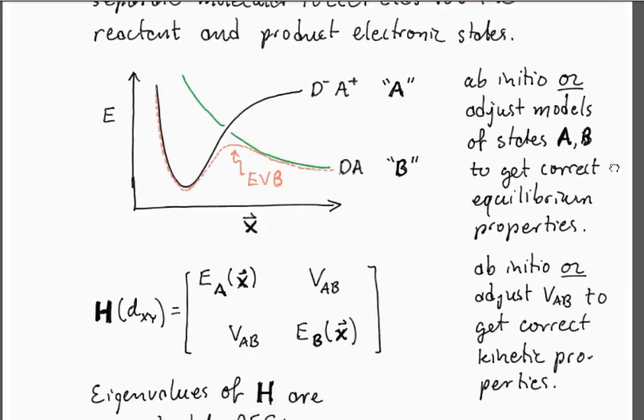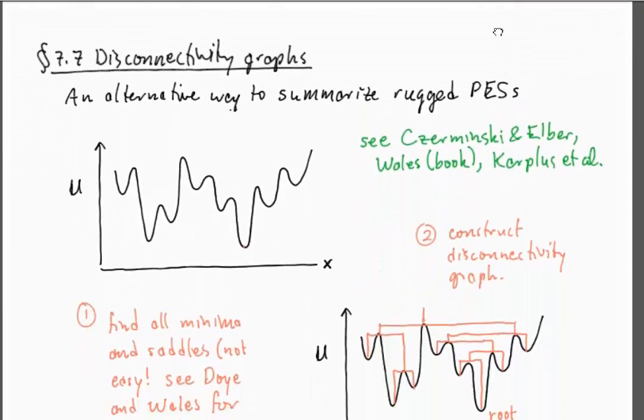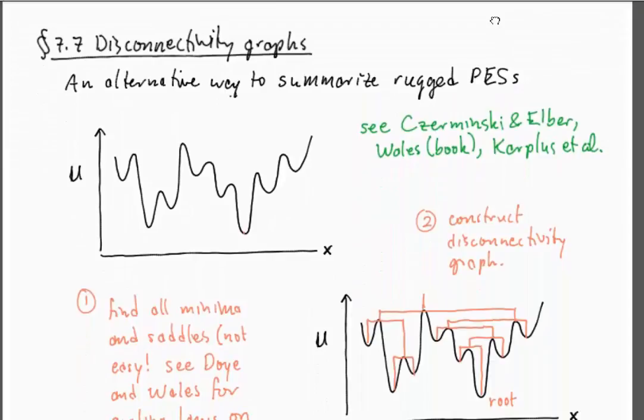Warshel developed this tool back in the late 70s and this has been recognized by a Nobel Prize in 2013. The other way of summarizing really complex potential energy landscapes is by a strategy that more aims at explicit enumeration of all of the saddles and the reactant minima, the local minima of the potential energy landscape.